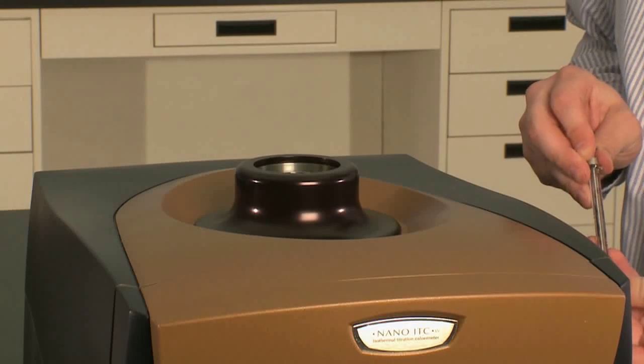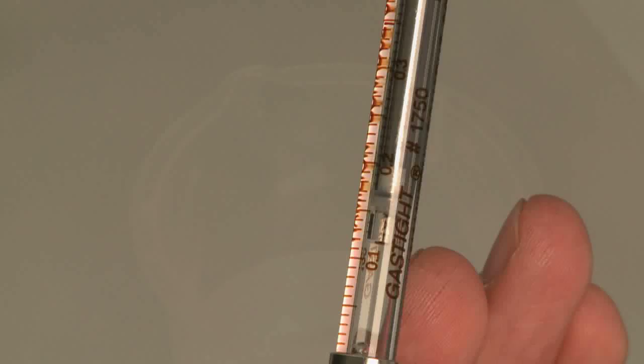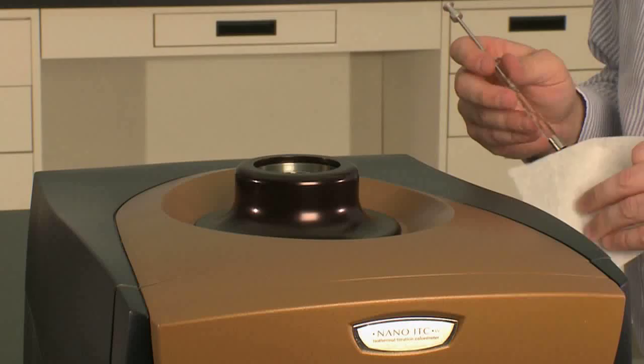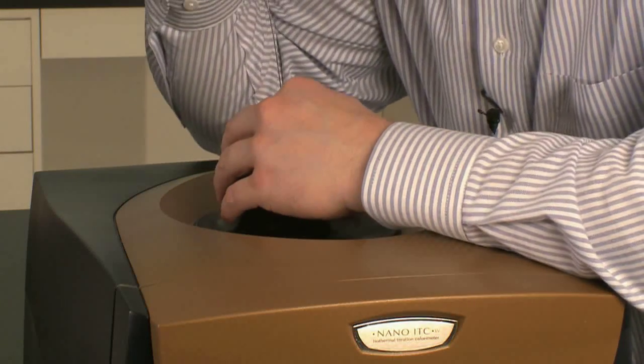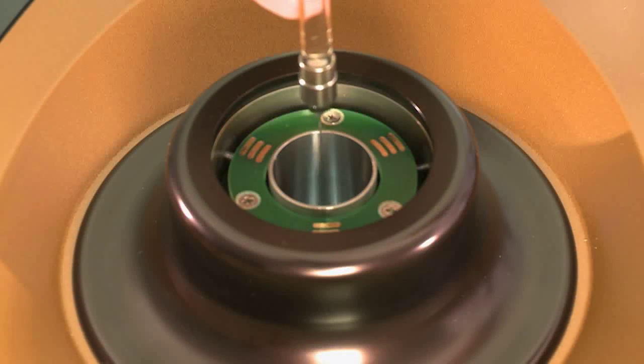With a half milliliter syringe provided, you want to load about 300 to 350 microliters of water in the reference cell. I always use water because most liquids you use are aqueous solutions, and water is the most inert and will balance the heat capacity to the reference side.